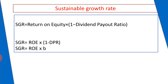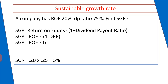Sustainable growth rate is calculated using the equation: Sustainable growth rate = Return on Equity × (1 − Dividend Payout Ratio). For example, a company has a return on equity of 20% and a dividend payout ratio of 75%. Find the sustainable growth rate.